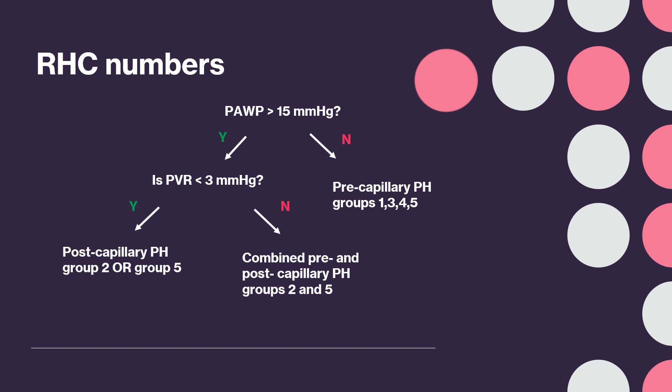With a pulmonary arterial wedge pressure greater than 15, the patient will have group 2, group 5, or a combination of these. Check the pulmonary vascular resistance: if it is less than 3, you have postcapillary groups 2 or 5. If it is greater than 3, think a combined picture of groups 2 and 5.